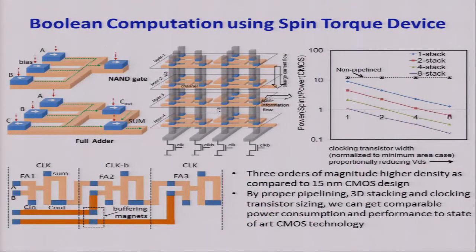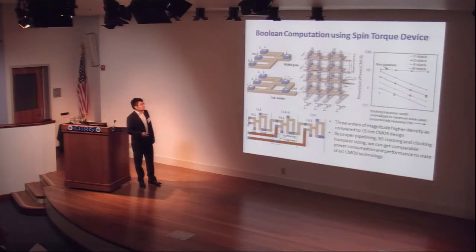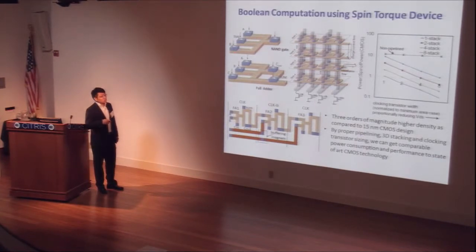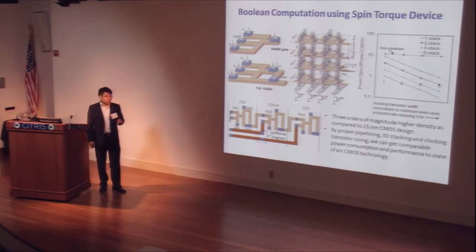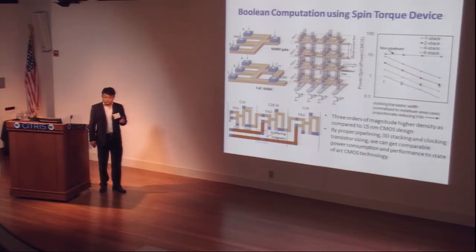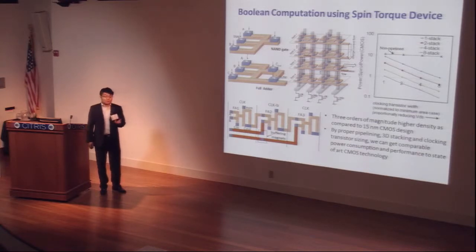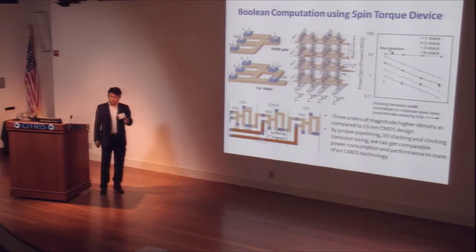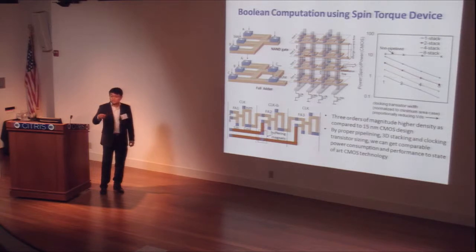Before I talk about neuromorphic computing, which is basically non-boolean computation, I will first give you a very brief introduction of boolean computation with spin-torque devices. All-spin logic employs several magnets interacting through non-magnetic channels. The compactness, non-volatility, and ultra-low voltage is the most attractive property of all-spin logic. But the high power dissipation and low switching speed of all-spin logic is a major bottleneck.